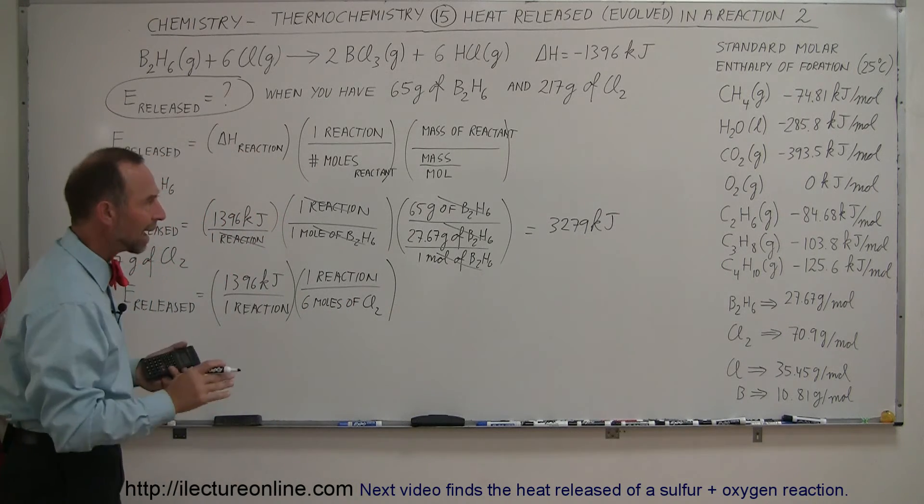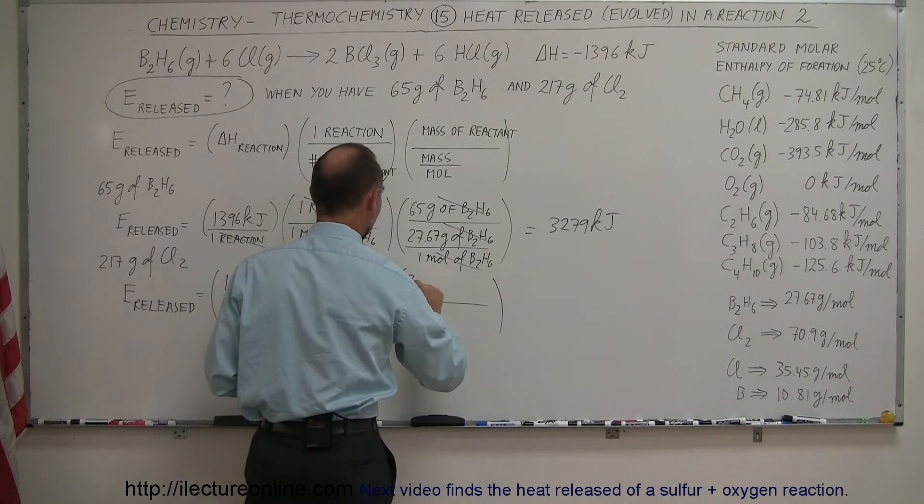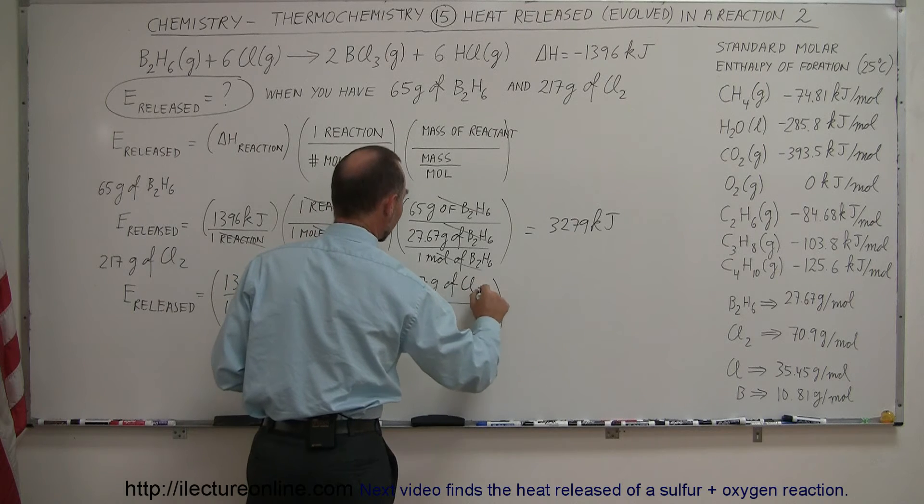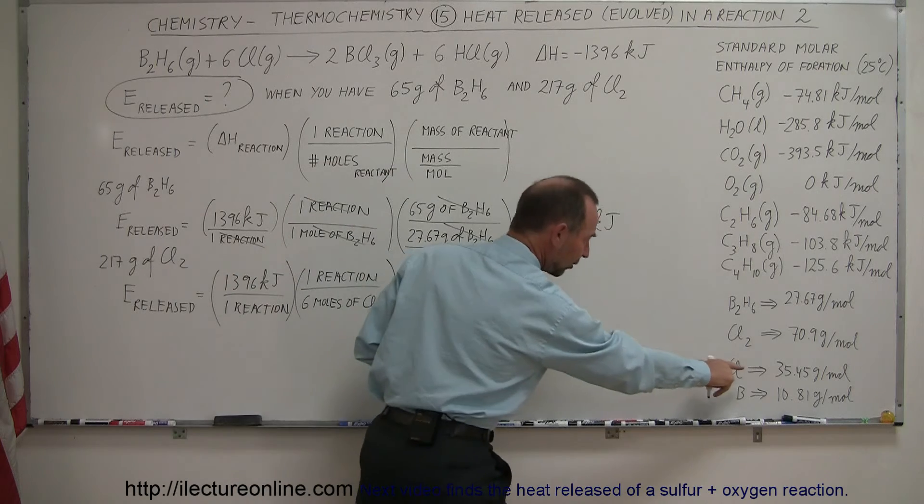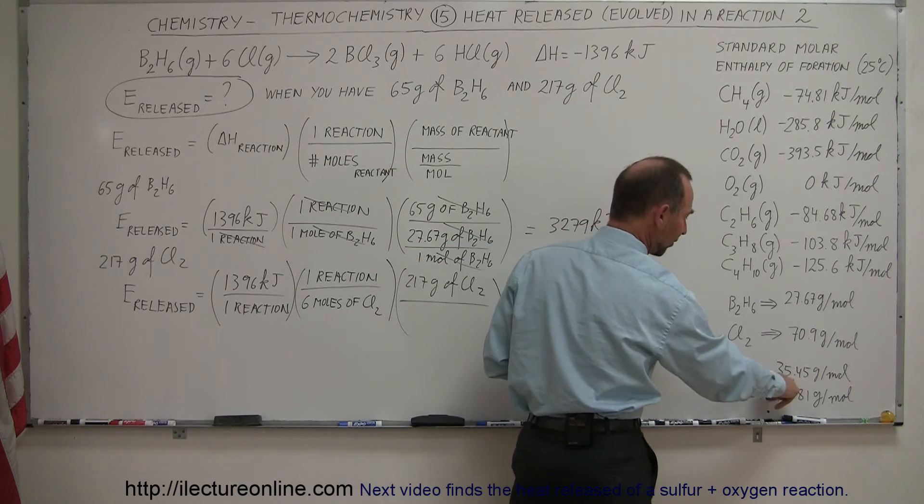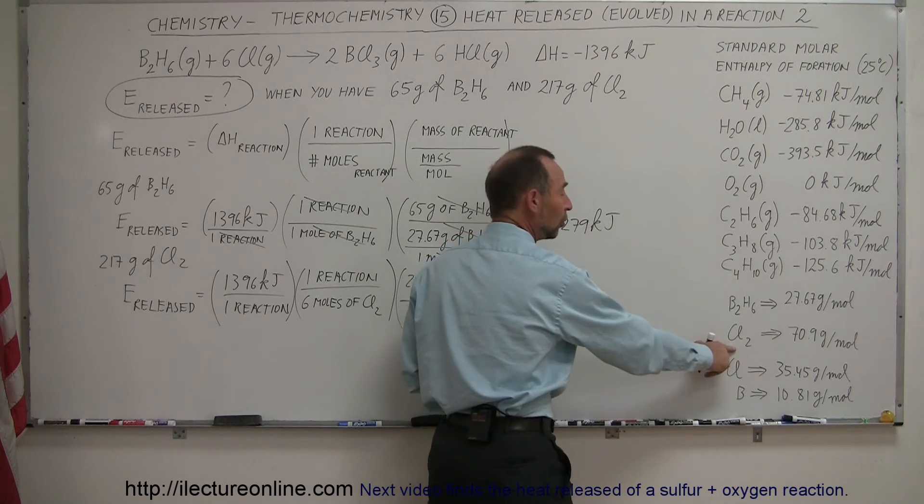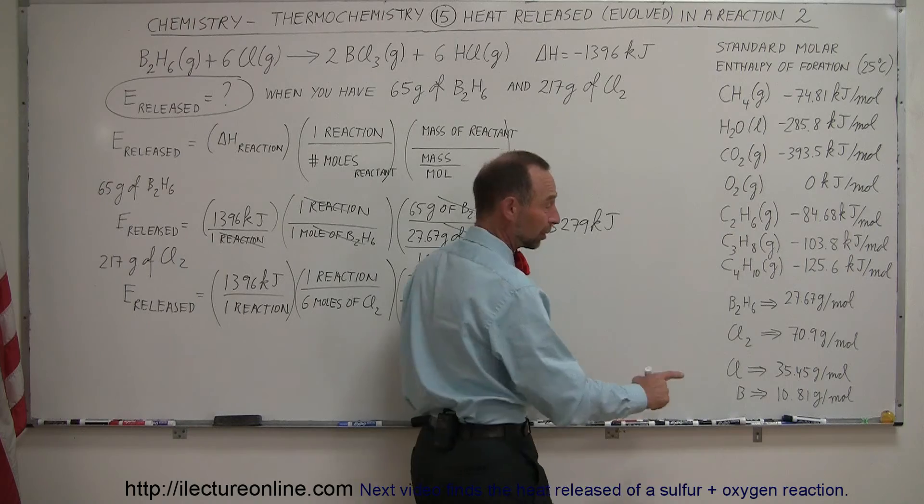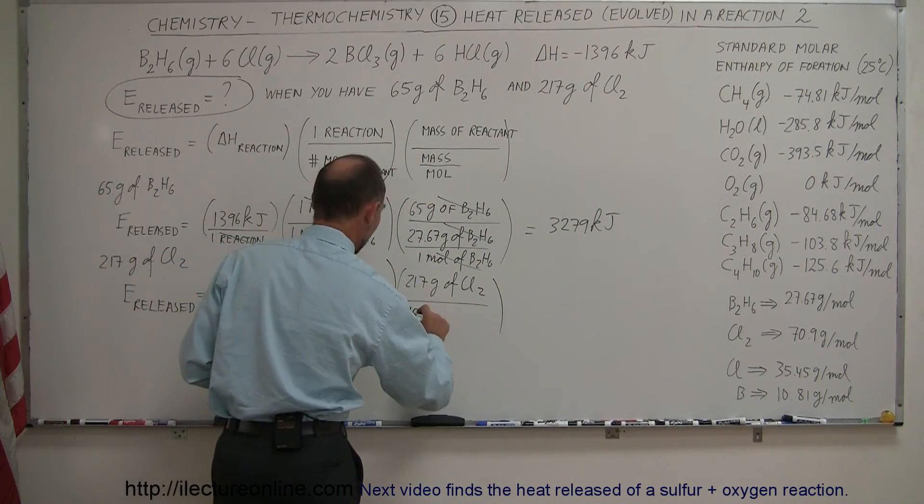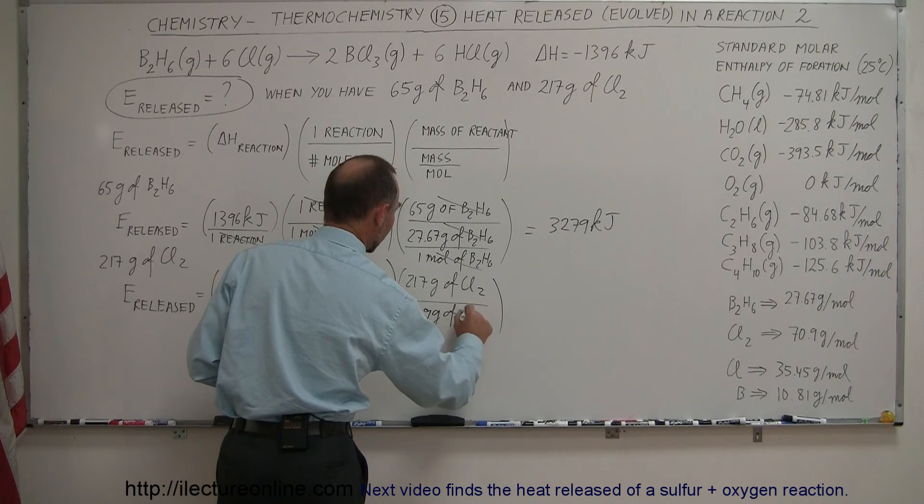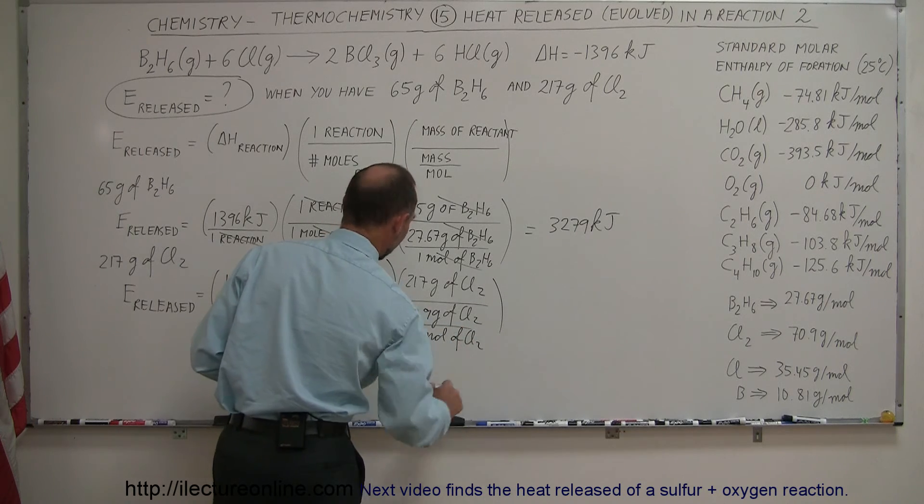Now we have to account for the mass of one mole. First we write down the mass in our sample, which is 217 grams of chlorine gas, and we divide that by the mass per mole. Right here, since one mole of chlorine has a mass of 35.45 grams, two chlorines, because it's a diatomic molecule, has a mass of 70.9 grams per mole. So we write 70.9 grams of chlorine gas per one mole of chlorine gas.